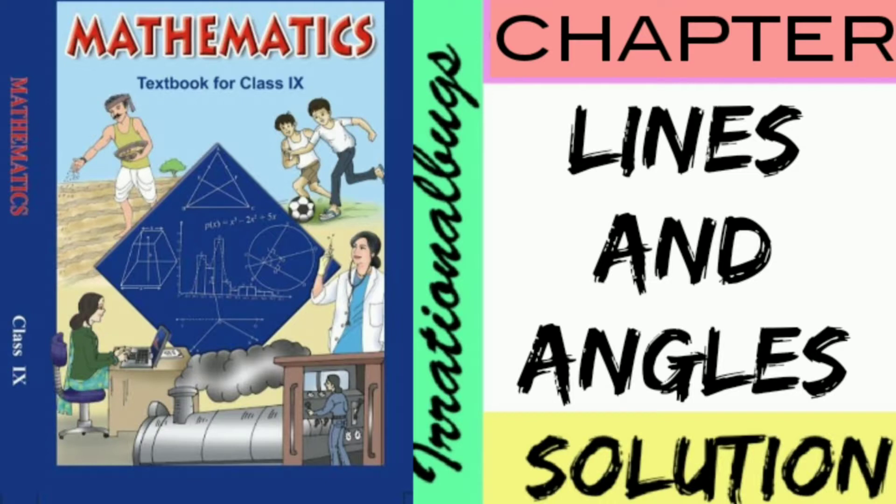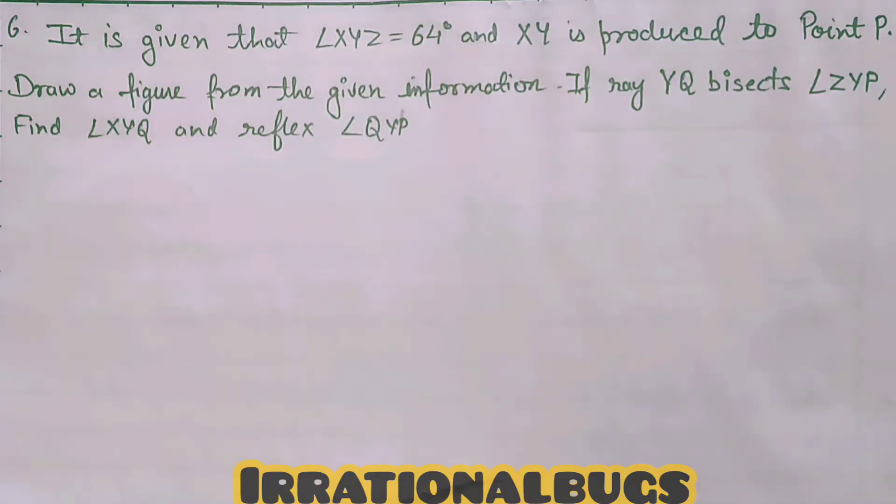Hello Students, today we are starting NCERT Class 9 Chapter Lines and Angles Exercise 6a. Question No. 6 is: It is given that angle XYZ is equal to 64 degrees and XY is produced to point P. Draw a figure from the given information. If ray YQ bisects angle ZYP, find angle XYQ and reflex angle QYP.